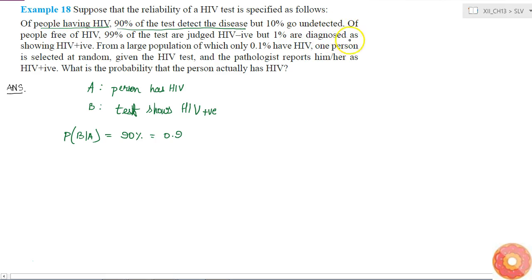The second statement tells us: of people free of HIV, 99% of the test are judged HIV negative, but 1% are diagnosed as showing HIV positive. That means probability of the test showing HIV positive given that people are free from HIV—that means A complement—is equal to 1%, not 99%, it is equal to 0.01.